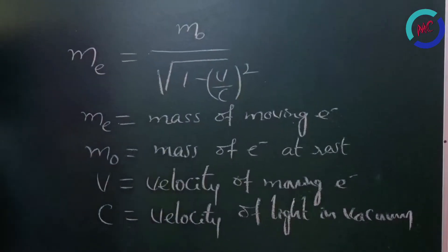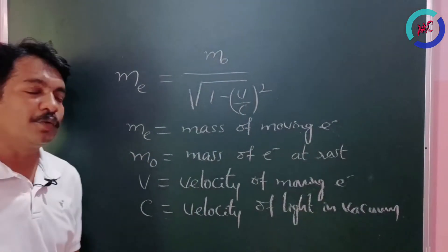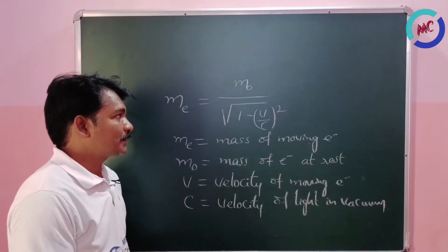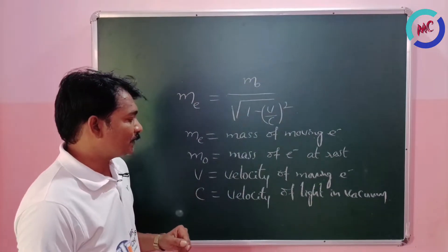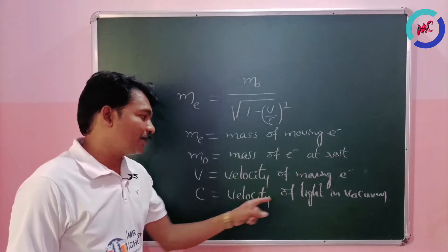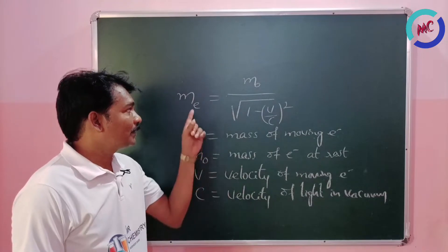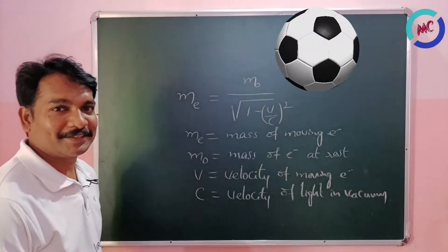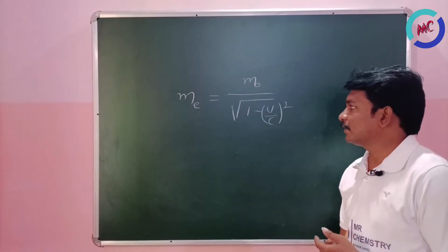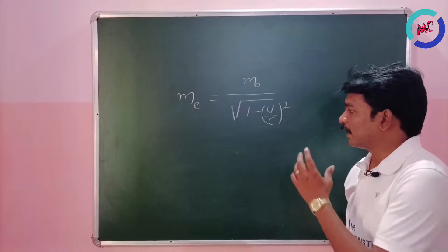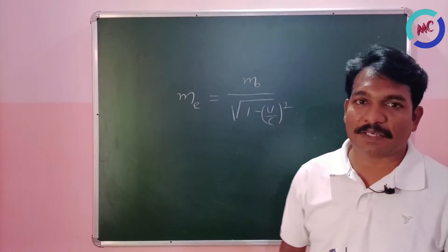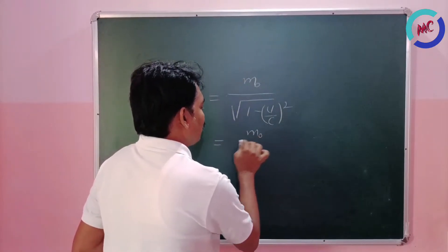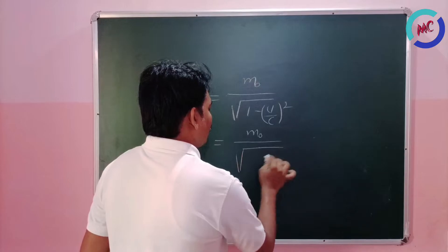By using this formula we can easily find out the mass of a moving electron. Let us consider a few examples. For example, if the velocity of the moving electron is equal to the velocity of light in vacuum, what is the mass of the moving electron? Let us substitute the values and check.